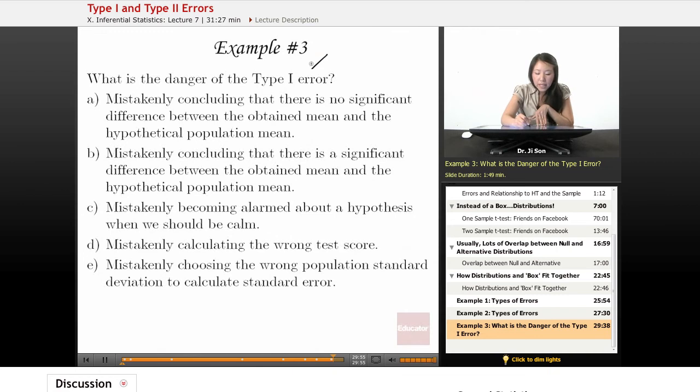Well, when you make a type 1 error, you have rejected the null, right? But the null hypothesis is true. So mistakenly concluding that there's no significant difference, well, that's not true because you concluded that there is a significant difference. That's why you rejected the null.